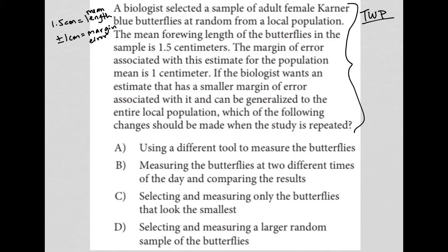The next sentence says, if the biologist wants an estimate that has a smaller margin of error associated with it and can be generalized to the entire local population, which of the following changes should be made when the study is repeated? So first of all, let's deal with the facts.